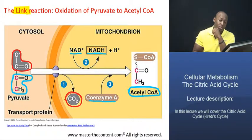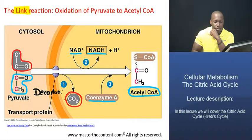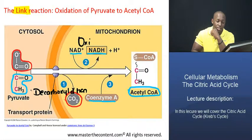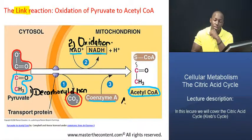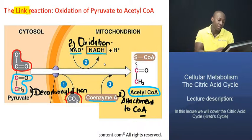So right off the bat, we have three main things happening. First, we have a decarboxylation reaction. In the second step, we have an oxidation. And in the third and final step, we have an attachment of the remaining fragment after oxidation to coenzyme A, and that's what produces our acetyl coenzyme A. Remember, that process actually happens inside the mitochondria.